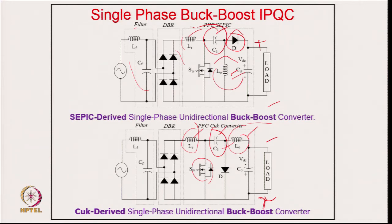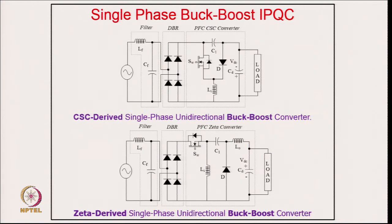The canonical switching derived converter is another buck-boost topology where making the inductor current discontinuous gives DCM operation. All these topologies — conventional buck-boost, SEPIC, CUK, canonical switching, Zeta — are buck-boost converters, meaning the output voltage can be reduced or increased, providing output from zero to higher than the input voltage while maintaining unity power factor on the supply side.